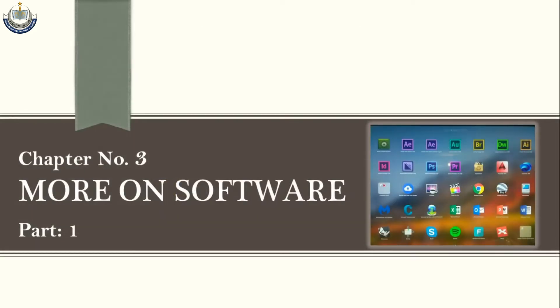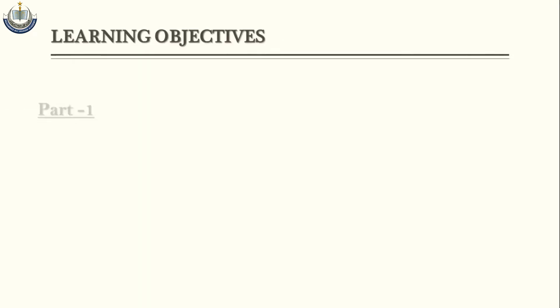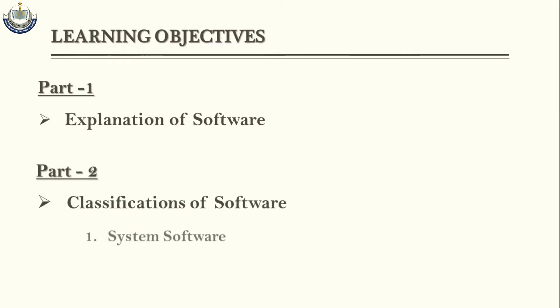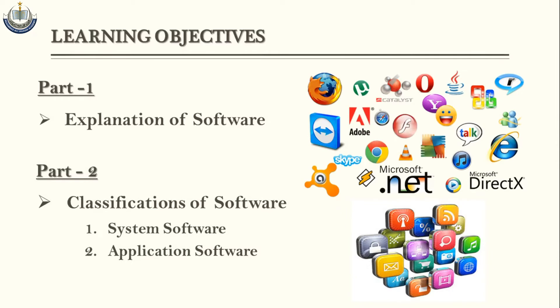Today we are going to discuss Chapter Number 3: More on Software. Students, you have already studied about software in your previous class, but now in this chapter we are going to learn about software in detail and its classification: number one, system software; number two, application software.